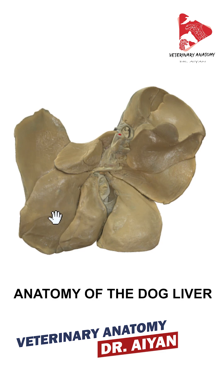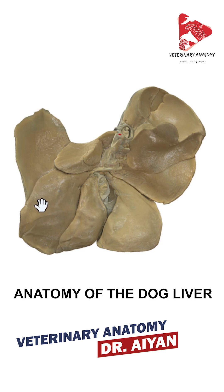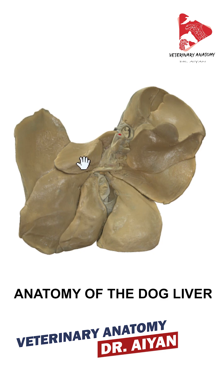From the quadrate hepatic lobe toward the left side, the rest is the left hepatic lobe, which is also divided into two parts in the dog. The lateral part is the one more to the left side next to the abdominal wall, and the one more toward the midline is the medial left hepatic lobe.